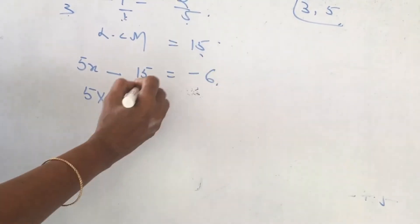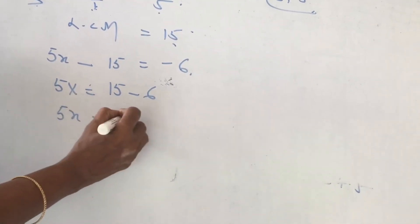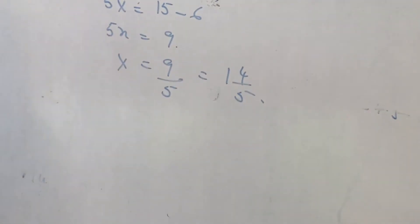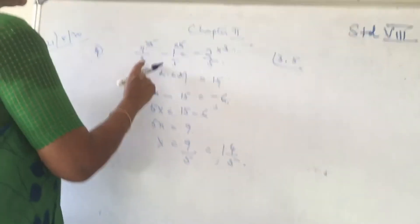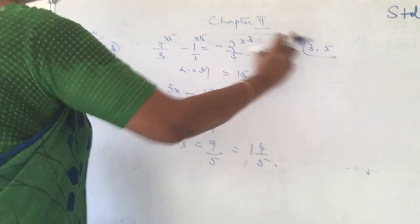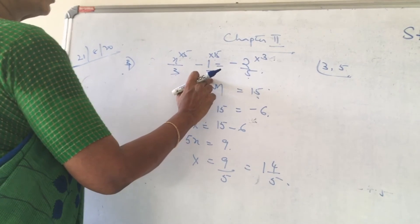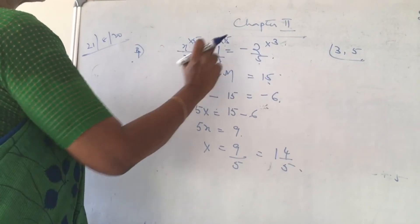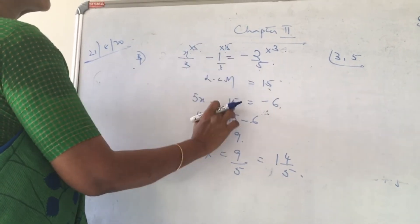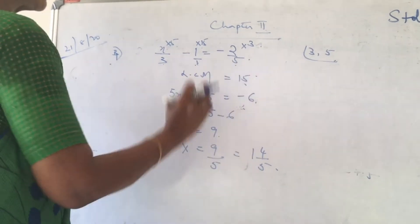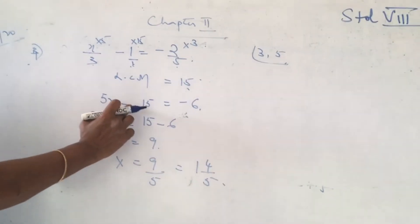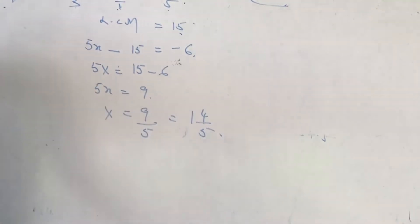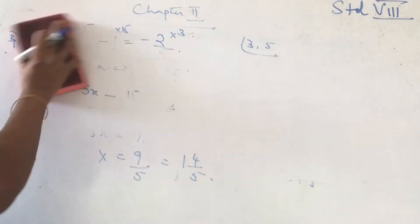x terms go to the left side, numbers to the right side. When you take from one side to another, the signs will change. 15 minus 6 is 9. Therefore x is equal to 9 by 5, which is equal to 1 and 4 by 5.